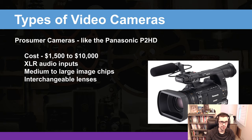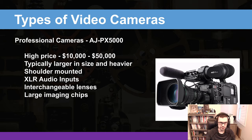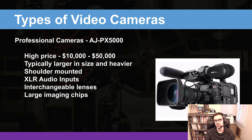Professional cameras — something like the AJPX 5000 — are highly priced at $10,000 to $50,000. They're typically larger in size and very heavy, with shoulder-mounted XLR inputs, interchangeable lenses, and large imaging chips. You might see one of these cameras out recording the news, or in very high-budget, high-end news settings where people are filming and doing live streams.